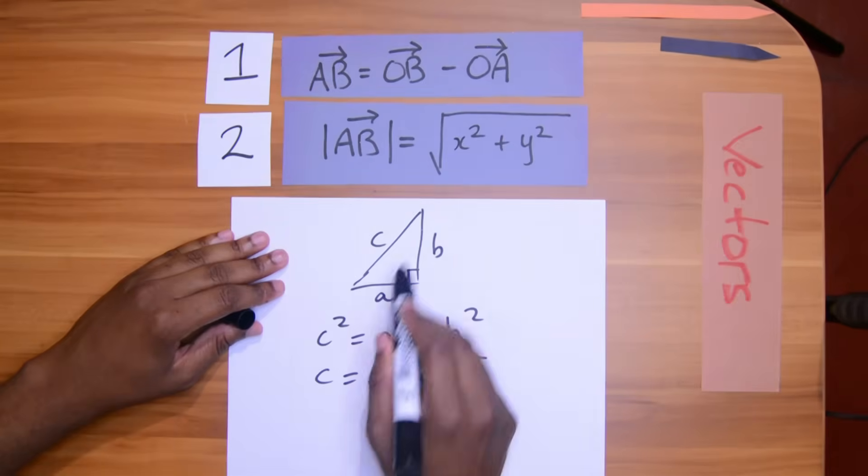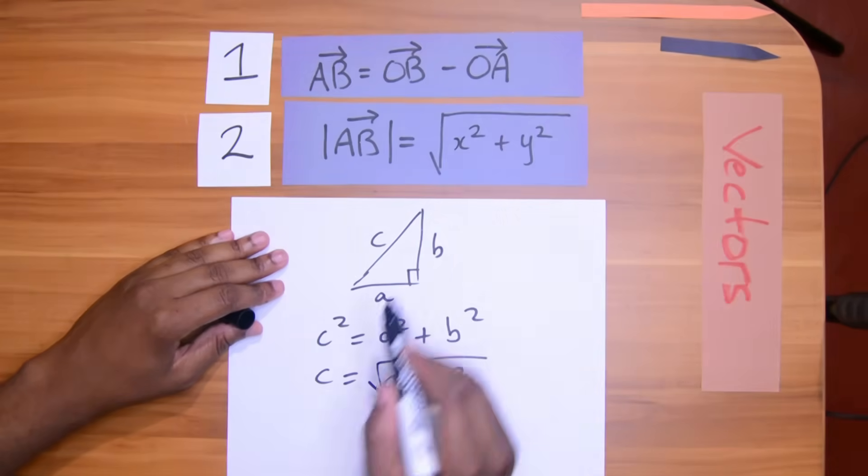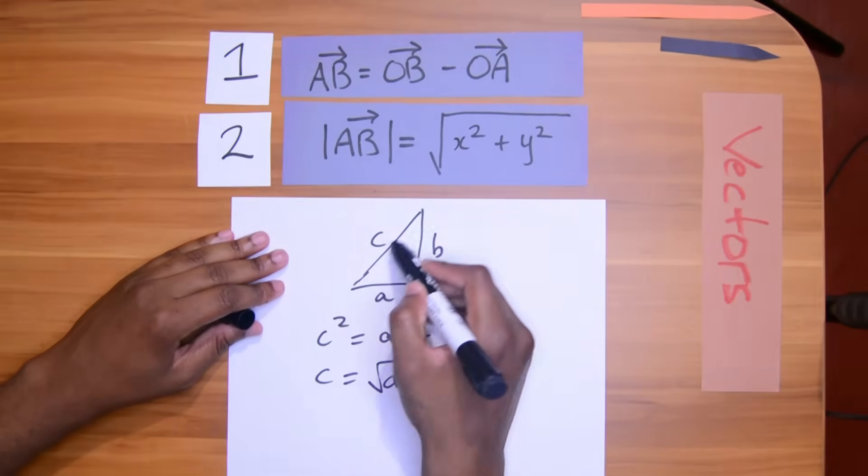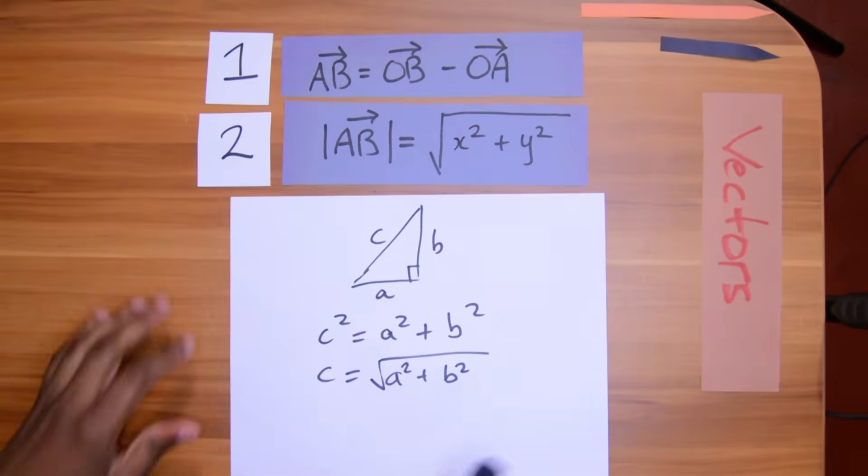In this case, A represents x, B represents y, and C represents the magnitude of the vector.